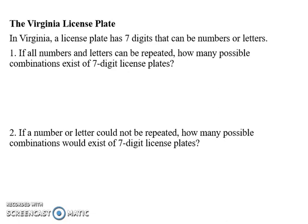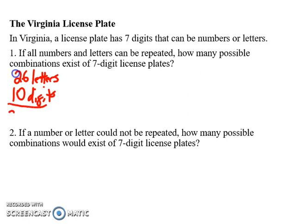When looking at creating the Virginia license plate, we have to think about how many total options there are. First, I know that I have 26 letters and 10 digits. Often people will say 9, but there are really 10 — 0 is also a digit, so 0 and then 1 through 9. That means there are 36 total options.